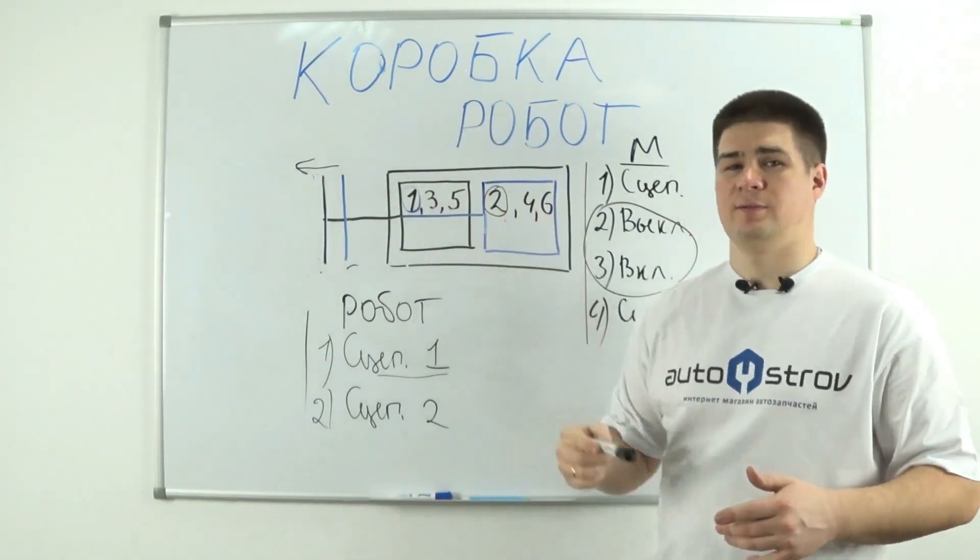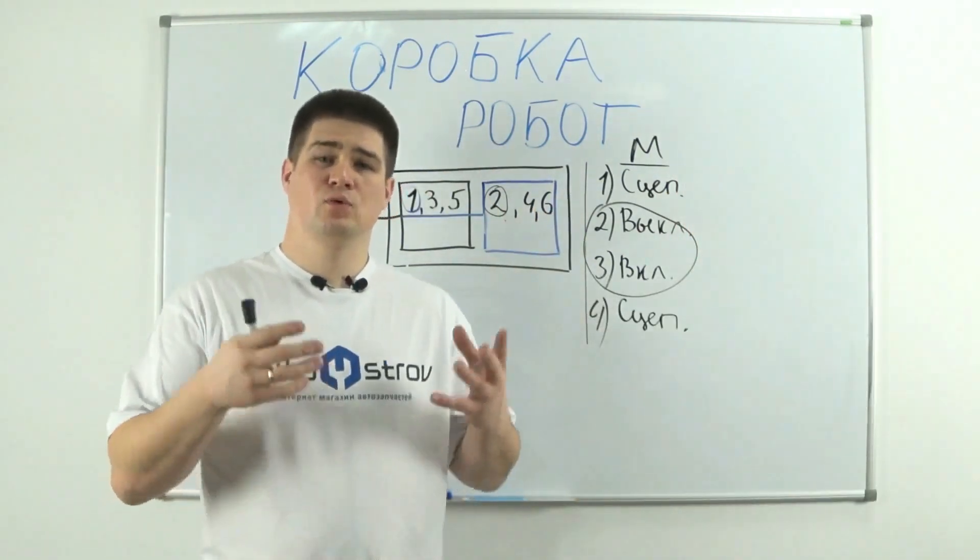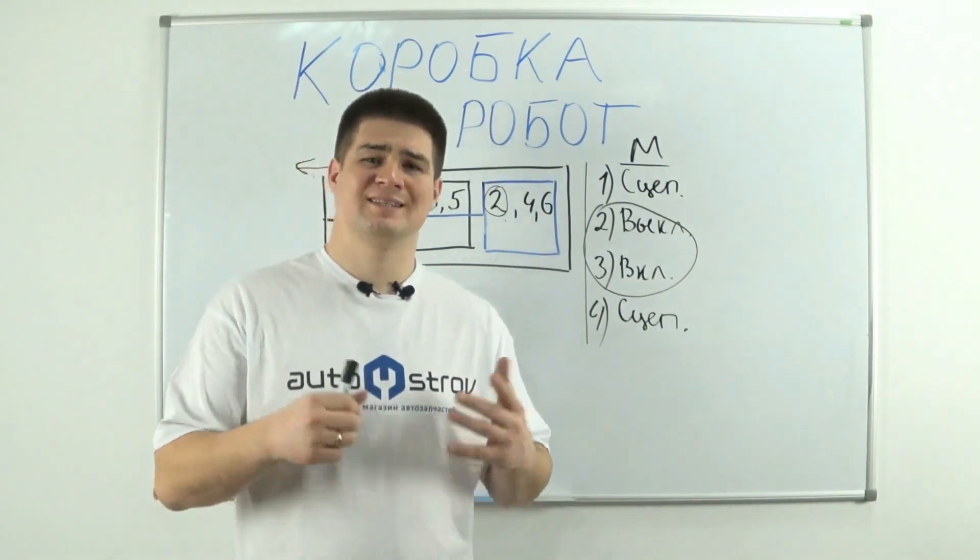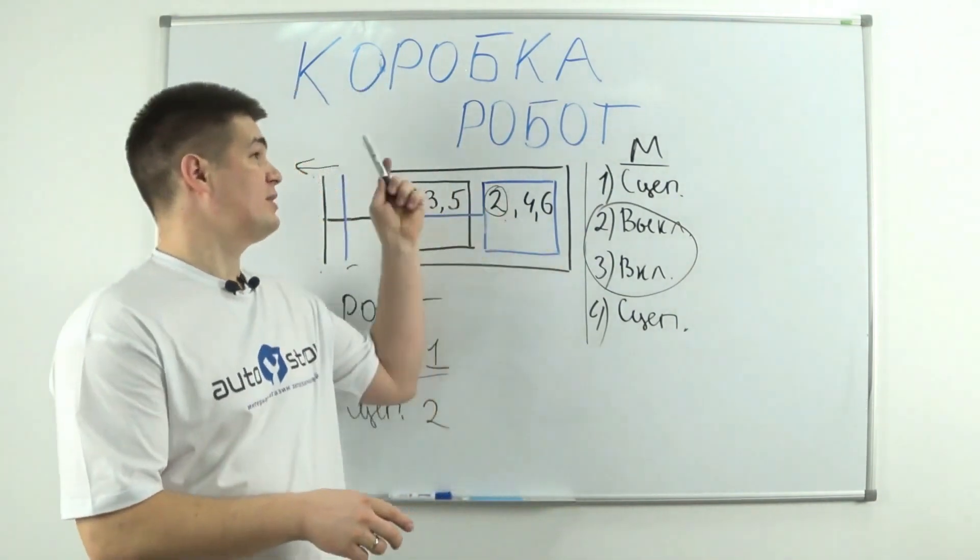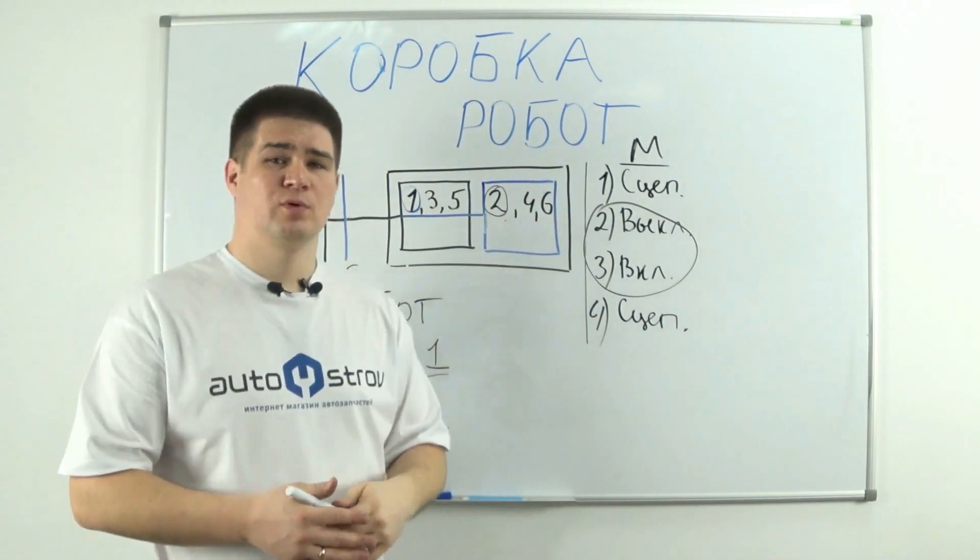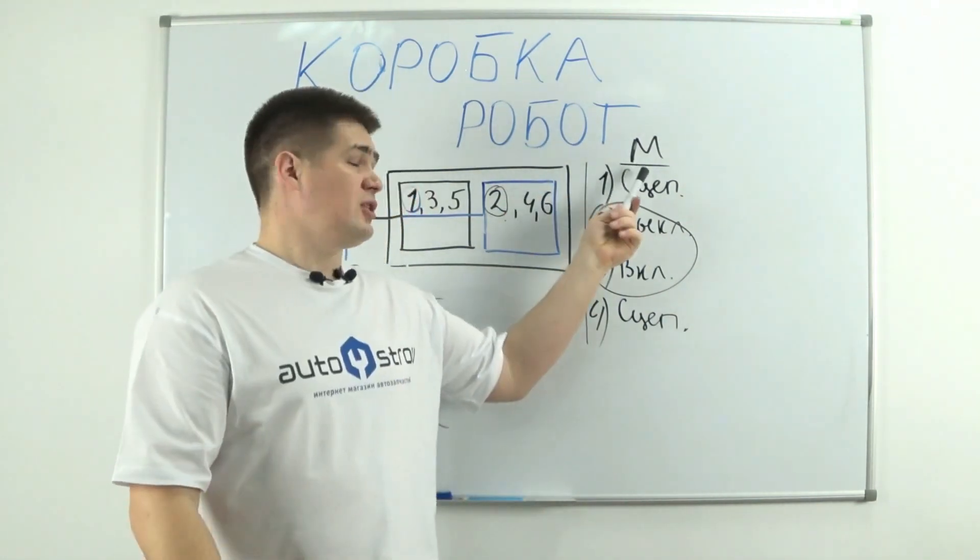But if you want to buy a used car with a mileage of more than 200,000 kilometers, then I definitely do not recommend buying a robotic gearbox, because it has a low lifespan. In this case, I recommend buying cars with a manual transmission or automatic.